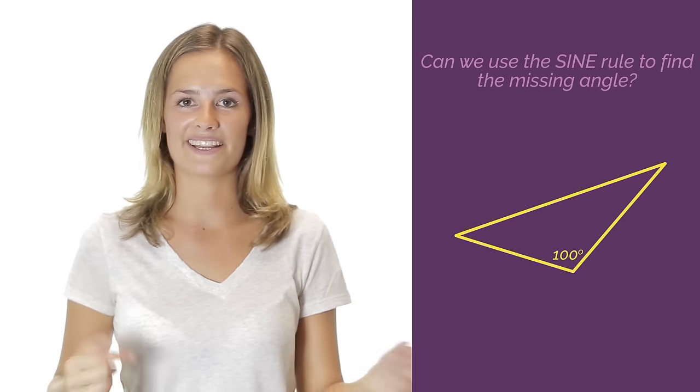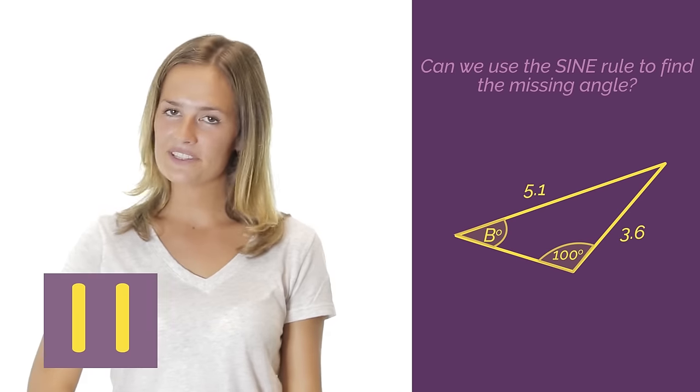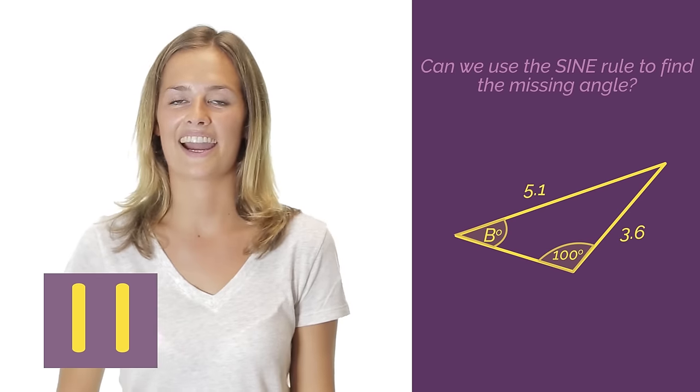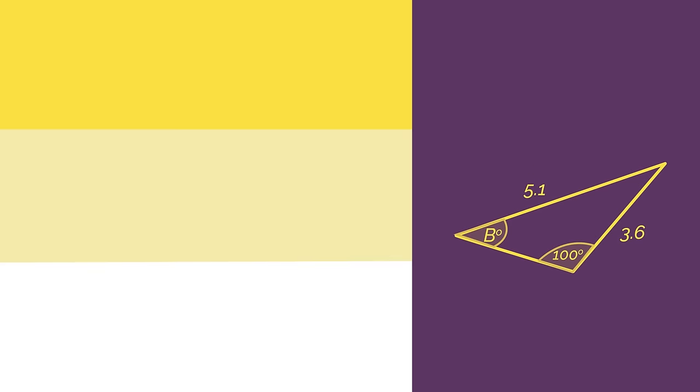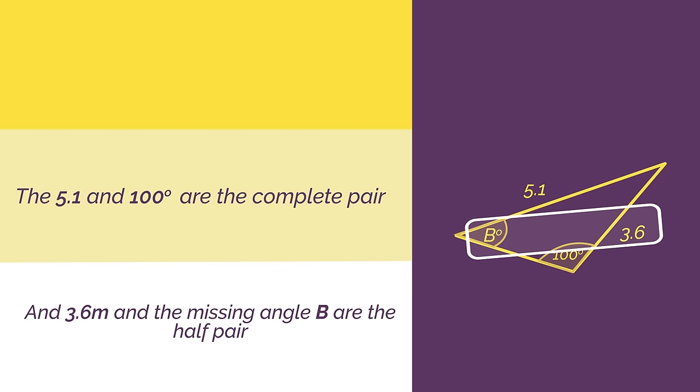Can we use the sine rule to find this missing angle? Pause the video, work out the answer and click play when you're ready to check. Yes we can! The 5.1 and 100 degrees are the complete pair and the opposite, and the 3.6 and the missing angle B are the half pair.